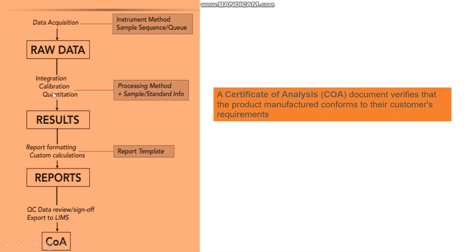Results are then obtained using different types of software. Reports are generated and forwarded to departments such as QC, or exported to a laboratory information management system (LIMS). Finally, a Certificate of Analysis (COA) is obtained, which is a document that verifies the manufactured product conforms to customer requirements.